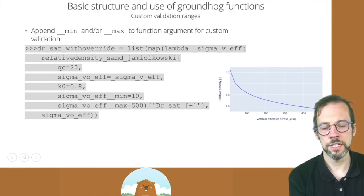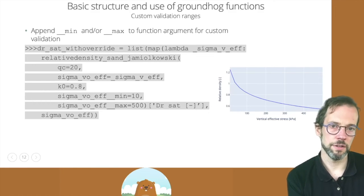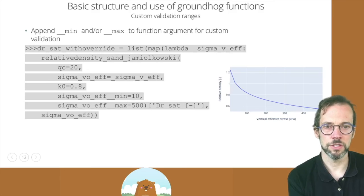So you will see in this function call that we have two additional arguments, sigma v0 f double underscore min and sigma v0 f double underscore max, which have the customized validation ranges.